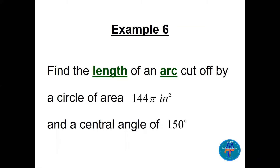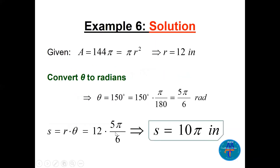Another example: find the length of an arc cut by a circle of area 144π square inches with a central angle of 150 degrees. First, find the radius: area = πr² = 144π, so r² = 144 and r = 12. Then convert 150 degrees to radians: 150 × π/180 = 5π/6 radians. Now use s = rθ = 12 × 5π/6, so s = 10π inches. Remember to write the units.